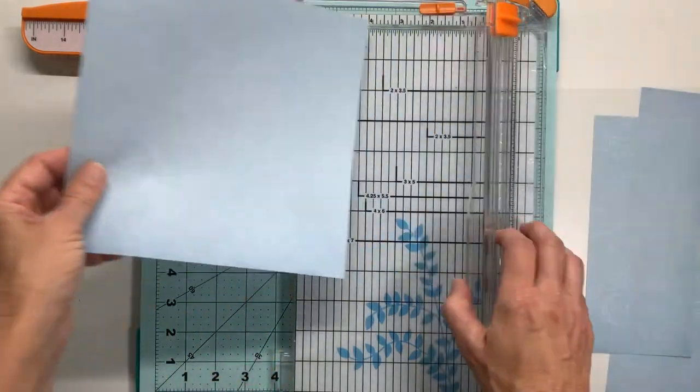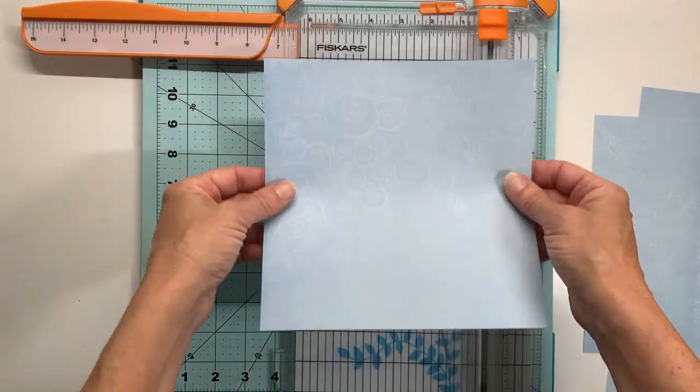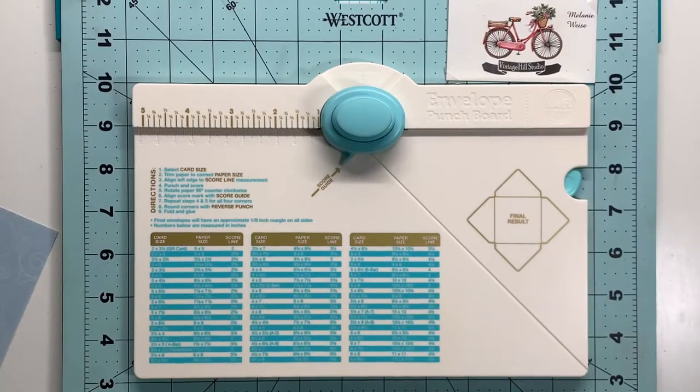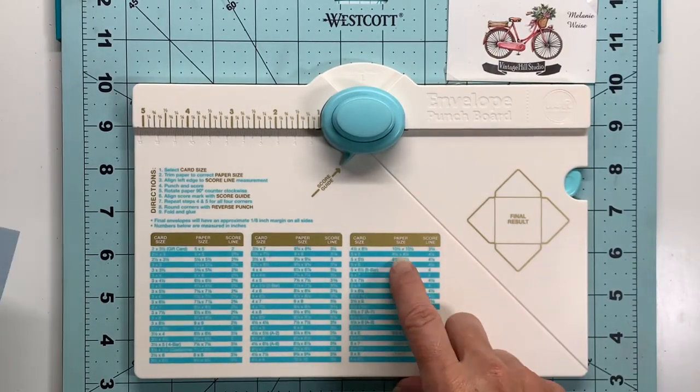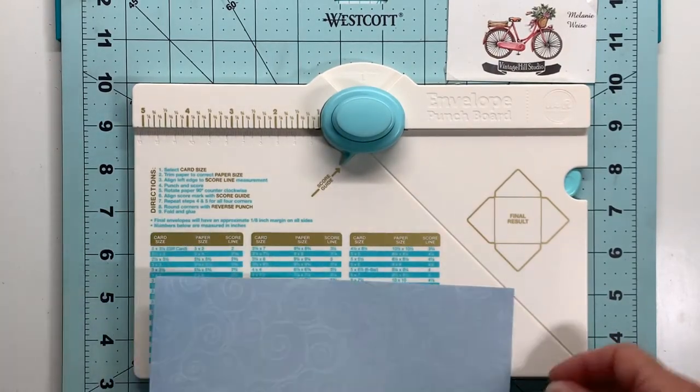Then I'm going to take that eight and a quarter by eight and a quarter piece of paper and it tells me that my score line needs to be at four and a quarter.